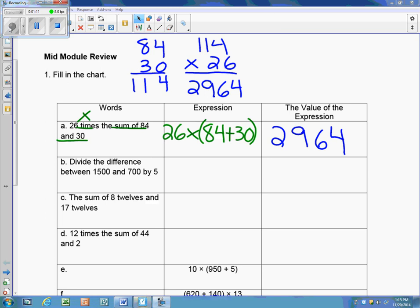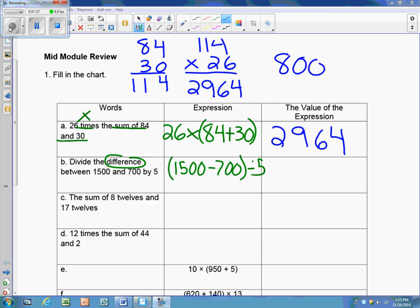Now we're going to do the next one which has to divide the difference between 1,500 and 700 by 5. The difference tells me to subtract. So we have to divide the difference: 1,500 minus 700 divided by 5. The first thing we need to do is what's in the parentheses, which is 1,500 minus 700 which gives us 800. Then we take 800 and divide that by 5. When we divide 800 by 5 we get 160.